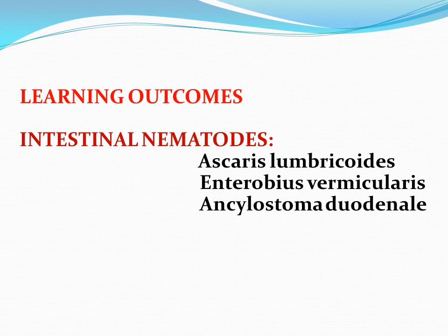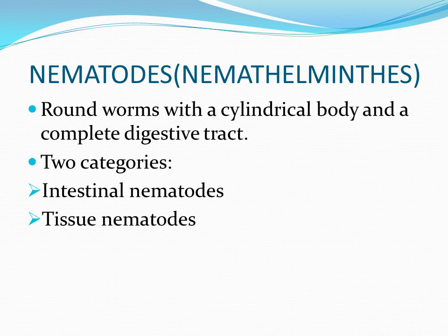The learning outcomes of this lecture are the intestinal nematodes. Among the intestinal nematodes, the important ones we will be discussing are Ascaris lumbricoides, Enterobius vermicularis, and Ankylostoma duodenale. Briefly about the nematodes: they are the round ones with a cylindrical body and a complete digestive tract including the mouth and anus. There are two separate sexes; the female is usually larger than the male, and the male has a typically coiled tail. Medically important nematodes are classified into intestinal nematodes and tissue nematodes, based on their location within the human body.